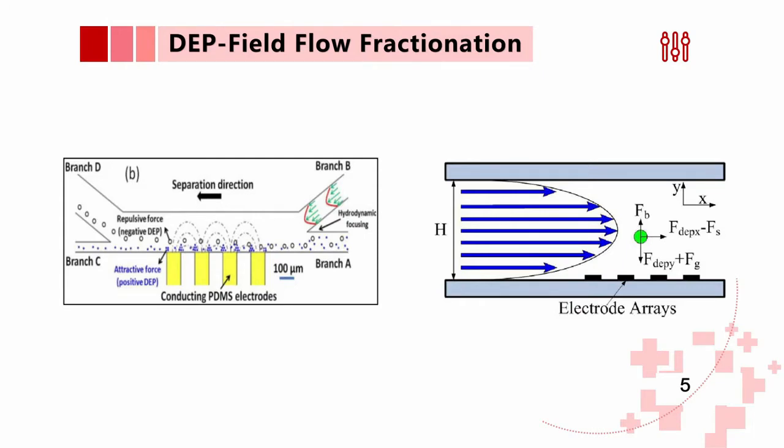In our case, since red blood cells and CTCs (circulating tumor cells, the cancerous cells) have different diameters, the effects of DEP force on them are different. This causes them to be located at different outlets.